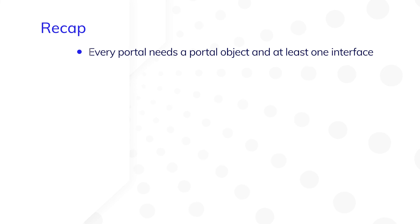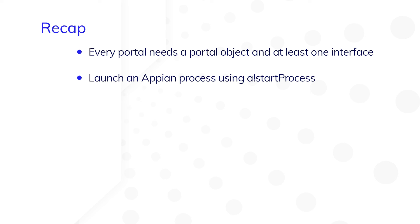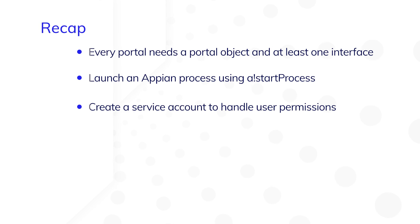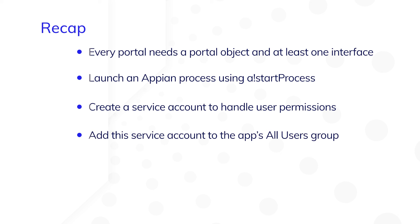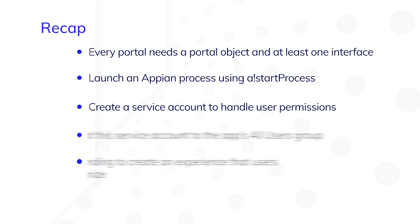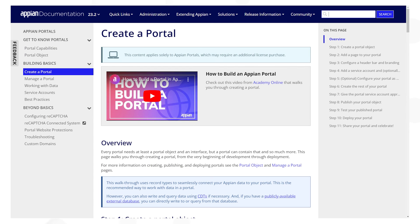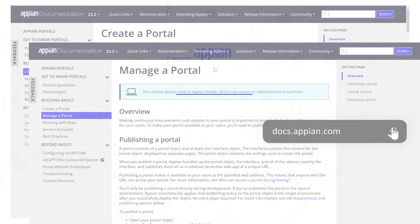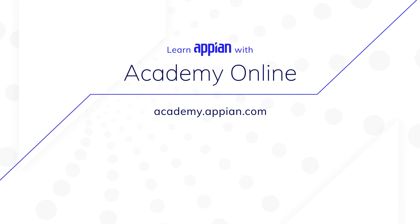Let's recap what you've learned so far. Every portal needs a portal object and at least one interface. You can easily launch an Appian process from a portal using a!startProcess. Create a service account to handle user permissions, and add this service account to the app's All Users group or any other group you want to use for your portal security. Apply branding to create an experience that users can easily recognize. For additional details, visit Appian Documentation.